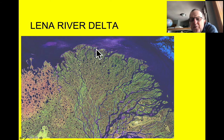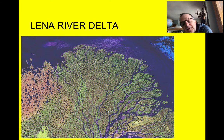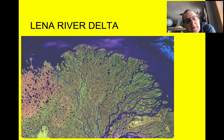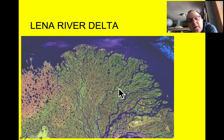Here's a beautiful delta picture taken from space of the Lena River, which flows from south to north in Siberia out into the Arctic Ocean. A beautiful delta with a huge amount of snow melt every year carrying vast amounts of sediment that are making land.